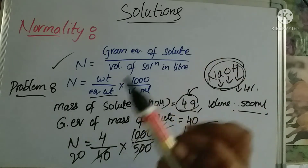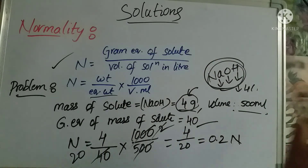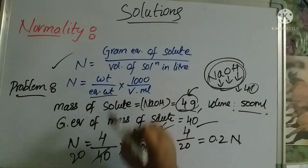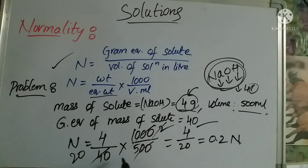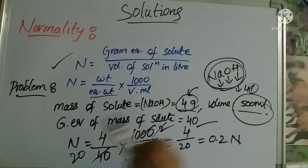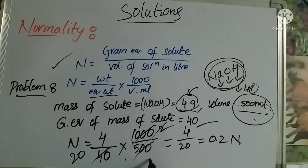NaOH has a weight of 40. So substituting: weight is 4, equivalent weight is 40, into 1000 by volume which is 500 mL. So N = (4/40) × (1000/500) = 0.2 normality.